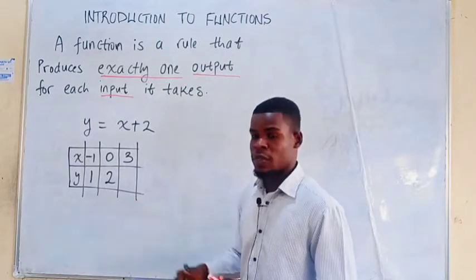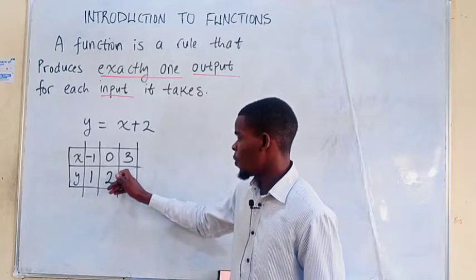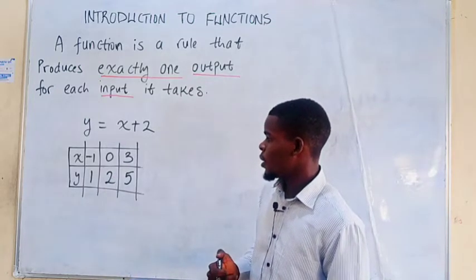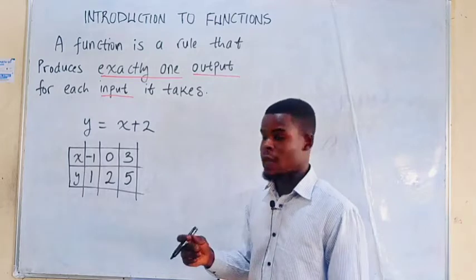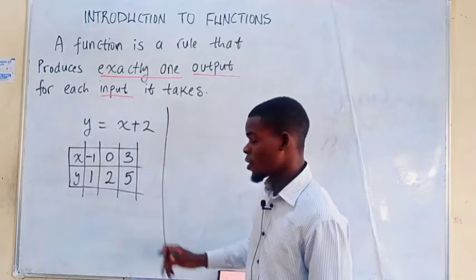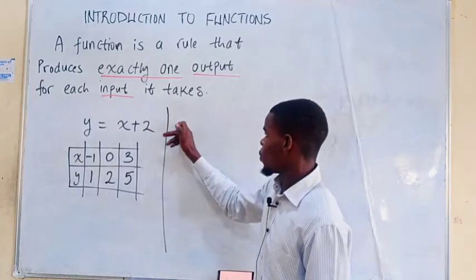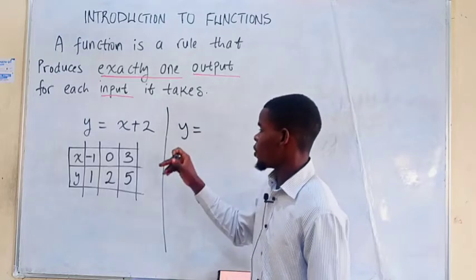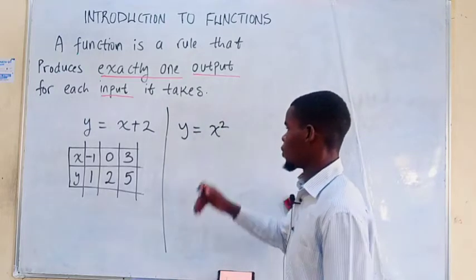So if you just plug in 3, maybe you can do that, you're going to have just 5. And then I can give you another example of a function. There are millions of them. Let me just give you something here. Let's say this is x squared.